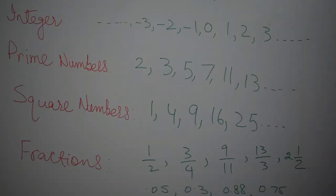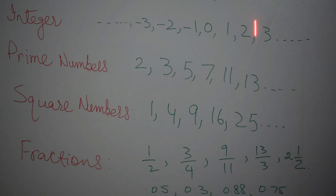Next come the prime numbers. Well, the prime numbers are the whole numbers greater than one, which has only two factors: the number itself and one. And you can see that two is also written over here, and this is the only even number in the prime numbers.